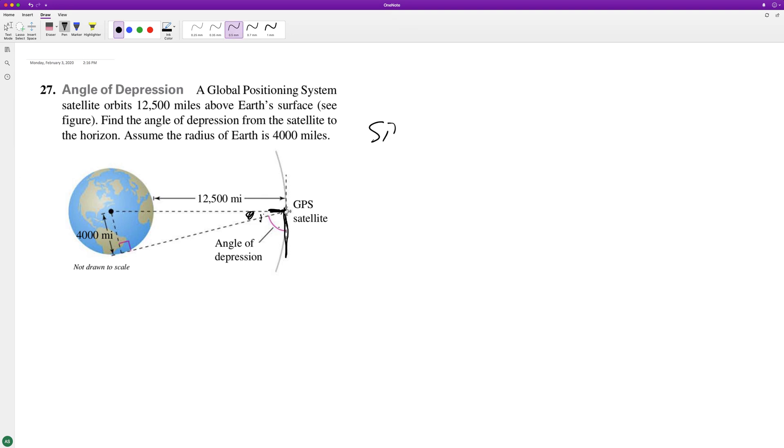So that's going to be the sine of the opposite, which is sine of theta equals the opposite, which is 4,000 over the hypotenuse, because the right angle is labeled right here. So you got to be careful about that.